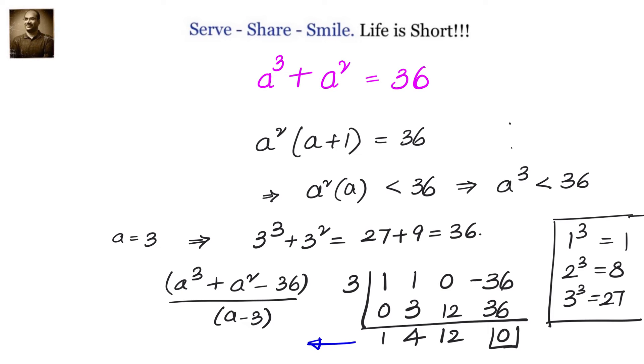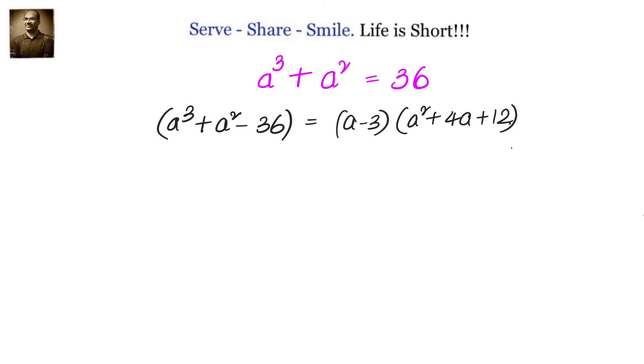So A³ + A² - 36 can be written as (A² + 4A + 12) multiplied with (A - 3).